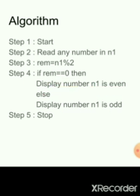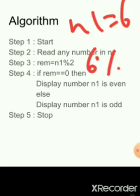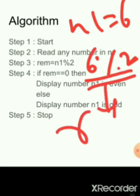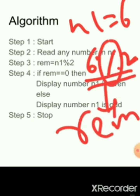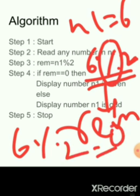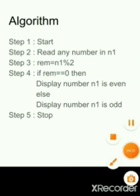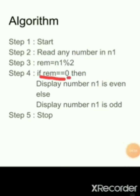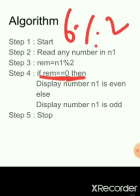Now suppose we take n1 = 6. So 6 % 2 — the modulus operator gives the remainder of 6 divided by 2. We get remainder 0. So in the third step, 6 divided by 2 gives remainder 0, which gets stored in the remainder variable 'rim.'